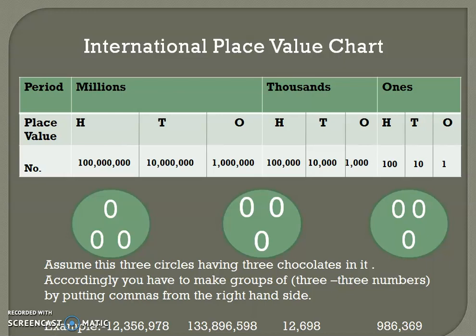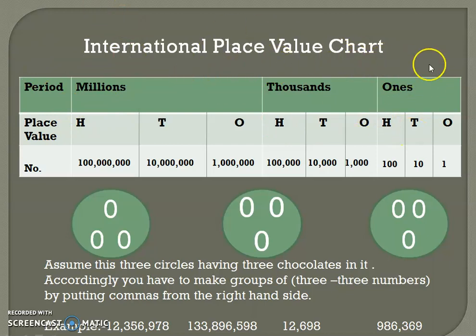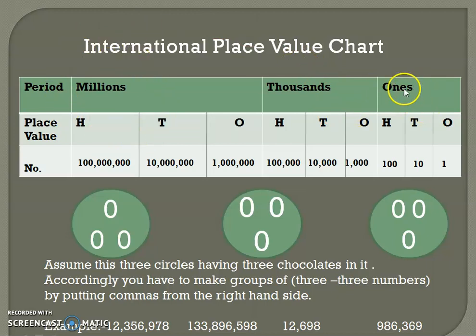First of all we'll start with the international place value chart. You can see in the first row: ones period, then thousands period, and then millions period. Each period has ones, tens, and hundreds place — thousands is also having ones, tens, and hundreds place.